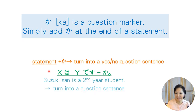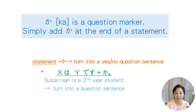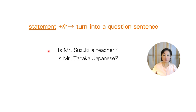Let's practice. 'Suzuki-san is a second-year student' — now turn this into a question. Suzuki-san wa ni-nen-sei desu ka? Now please say this sentence in Japanese: 'Is Suzuki-san a teacher?' Suzuki-san wa sensei desu ka?